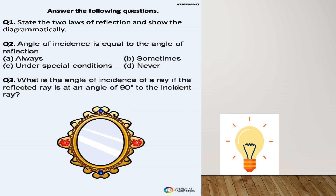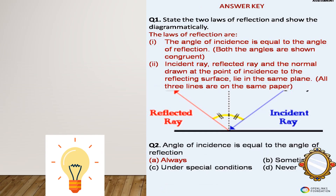Question: the angle of incidence is equal to the angle of reflection — always, sometimes, under special conditions, or never? The answer is always. Next question: what is the angle of incidence if the reflected ray is at 90 degrees to the incident ray? Since the angle between the incident and reflected rays is 90 degrees, each makes half of that with the normal — so the angle of incidence is 45 degrees.